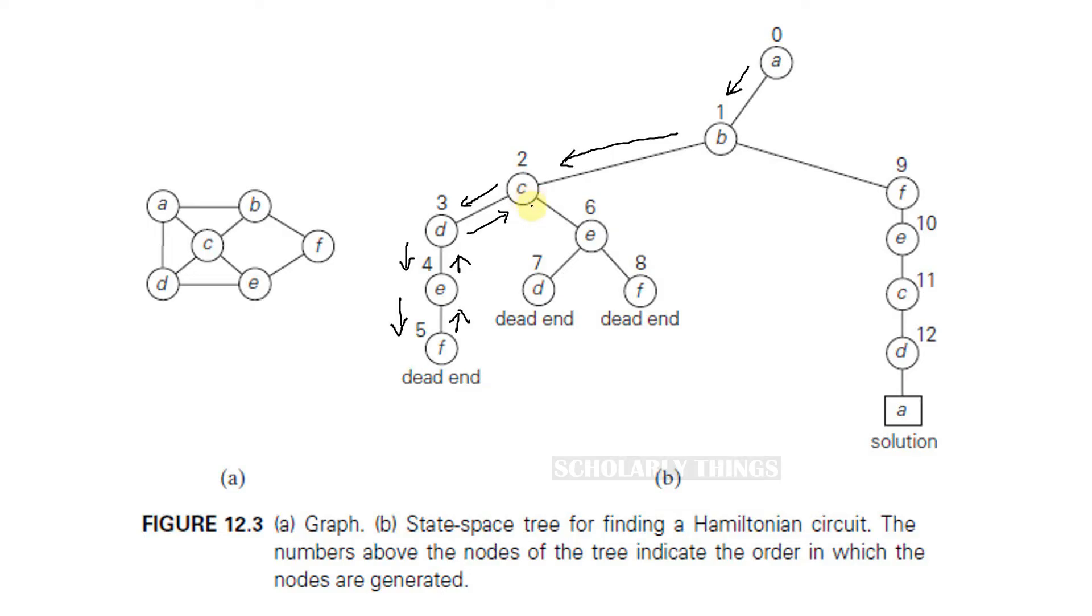At C we have one more option of visiting E. So go to E. From E you can go to D, but you find that D is a dead end. A, B, C, E, and then D—it is a dead end. So go back to E, its parent node. The other option from E is F.